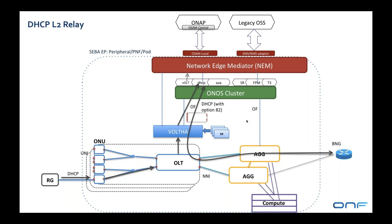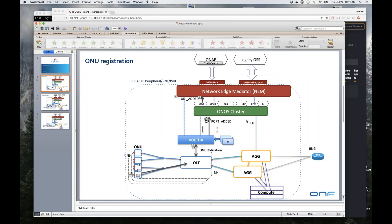A few messages get exchanged back and forth between the RG and the BNG with the DHCP relay app in the middle. The DHCP relay app understands the state machine of the DHCP process and knows whether the user has a valid IP address. When the user gets an IP address, the DHCP application will also export that as a notification on the Kafka bus, and we'll be able to pick that up and insert that information into the state held about the subscriber. That's not implemented right now but will be implemented pretty soon.